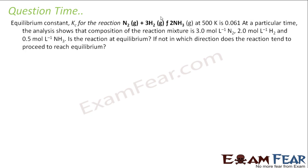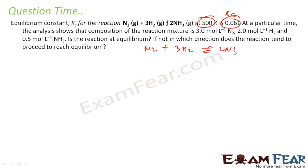Let's take one more question. The equilibrium constant Kc for the reaction N₂ + 3H₂ gives 2NH₃ at 500 Kelvin is 0.061. At a particular time, the analysis shows the composition of the reaction mixture is: N₂ at 3 moles per liter, H₂ at 2 moles per liter, and NH₃ at 0.5 moles per liter.